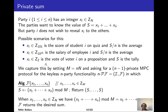Coming back to something more concrete, we're going to talk about how you compute the sum function. Each party has an input which we view as an integer in Z mod N, and what the parties want to know is the sum of all these inputs — computed as an integer, not modulo anything. The main constraint is privacy: party i doesn't want to reveal its input to the others.